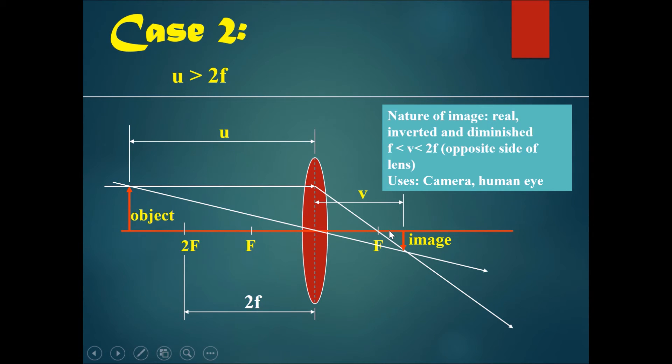So in the exams, they would ask you to describe this image perhaps after drawing it. You would say the nature of the image is real. You can produce this onto a screen. It is inverted and it is diminished. It is smaller than the object.